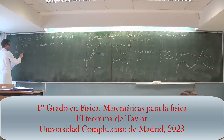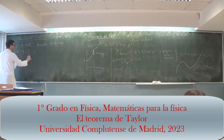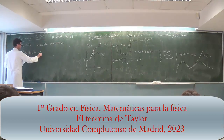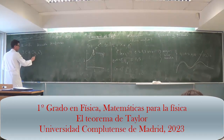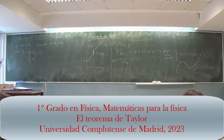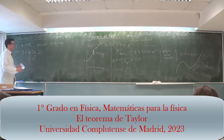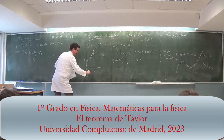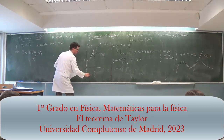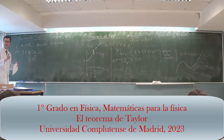Statement of the theorem: there exists a C in the interval AX — A is the point where we expand (this is yesterday's X₀). We expand around A. In the example, A would be 0 and X would be any point up to 1, or 0.8, or whichever X we choose in that interval.